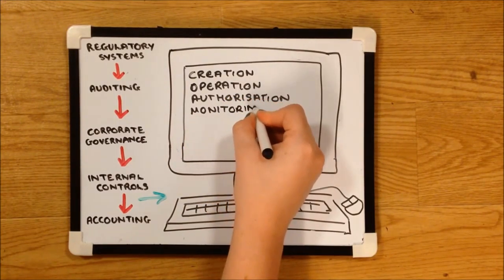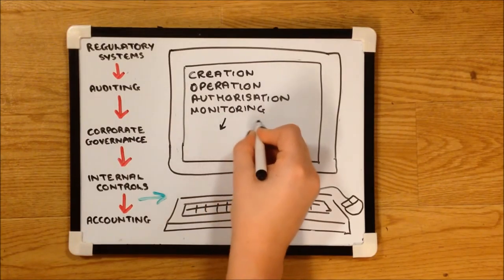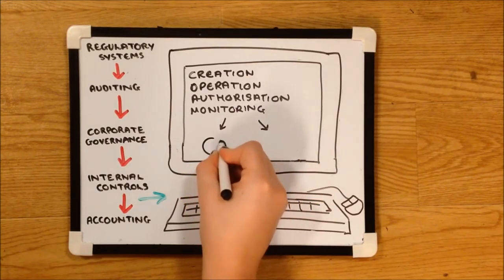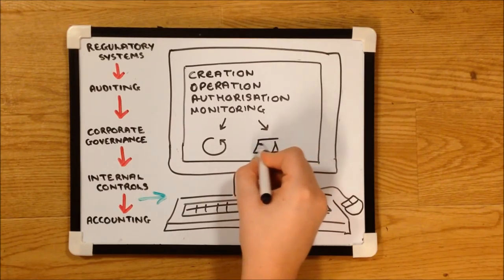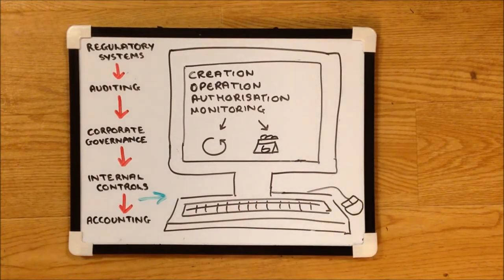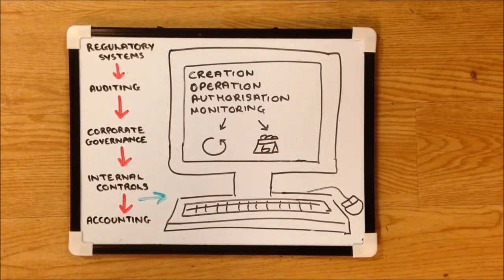The COSO model lays out two ways of monitoring internal controls. The first is continuous monitoring, where management look at trends based on data from the system and investigate any anomalies. The second is periodic monitoring, which is carried out by internal auditors.